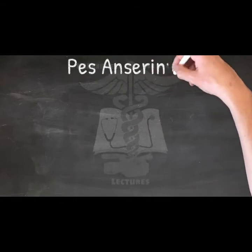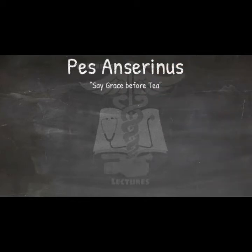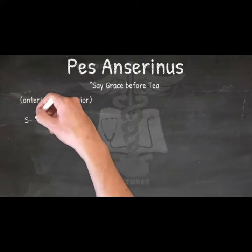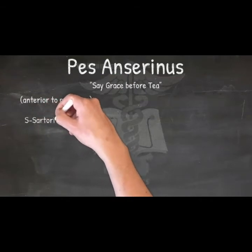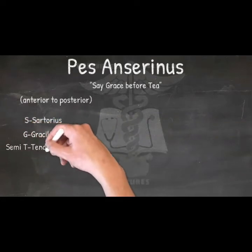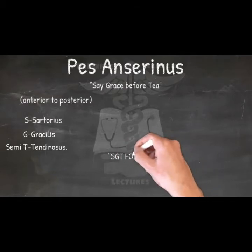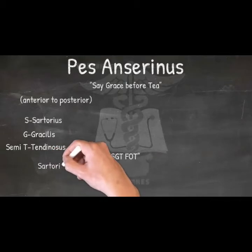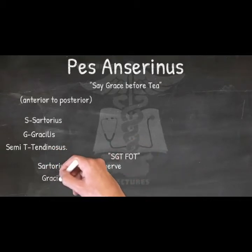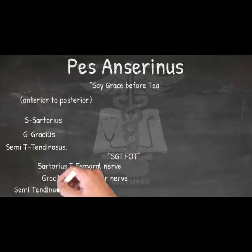Pes anserinus — mnemonic: 'Say Grace Before T.' Insertion of the tendons forming pes anserinus to the anterior surface of the medial tibial condyle, from anterior to posterior: Sartorius, Gracilis, and Semitendinosus. For nerve supply: Sartorius by femoral nerve, Gracilis by obturator nerve, Semitendinosus by tibial nerve.